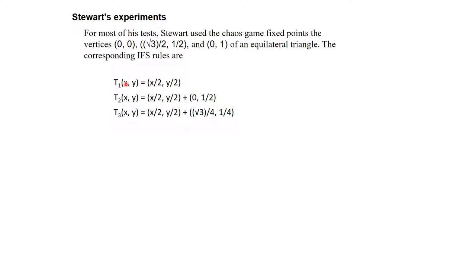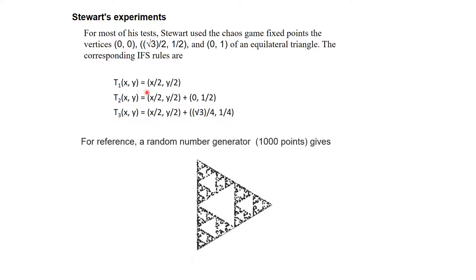For his experiments, Stewart chose the fixed points as the vertices of an equilateral triangle: (0,0), (0,1), and (√3/2, 1/2). The corresponding IFS rules to create a Sierpinski gasket are: Transformation 1 is scaling by half; Transformation 2 is scaling by half and shifting in the y direction by half; Transformation 3 is scaling by half and shifting in x by √3/4 and in y by 1/4. When using a random number generator with about 1000 points, this gives almost a Sierpinski gasket.